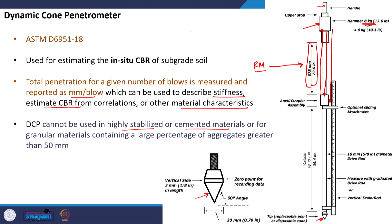If you are interested to analyze a subgrade soil but over it there is a stiff material — for example, a cement concrete slab — then you have to drill a hole, remove this material, and then put your DCP cone to do the test. So you can do the test from the surface by drilling the hole.